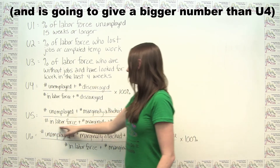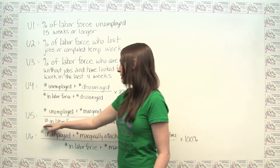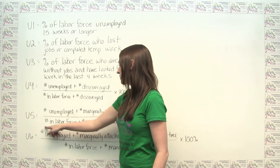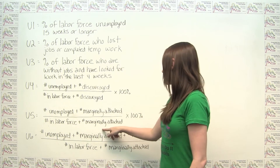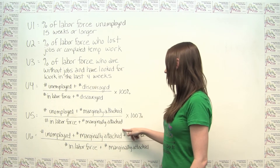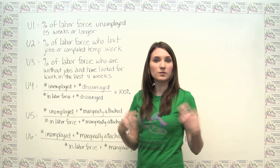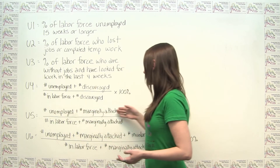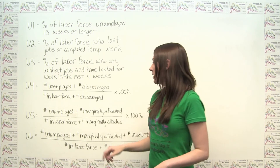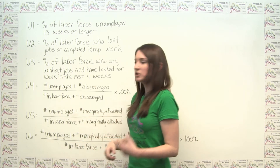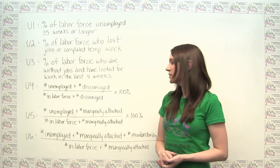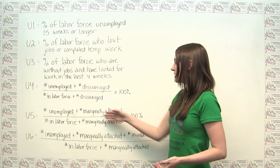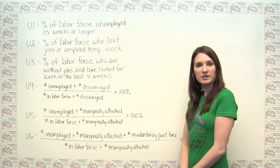In the U5 measure, the pool of people in the denominator includes those traditionally in the labor force plus those counted as marginally attached workers. The numerator counts people who fit the traditional definition of unemployment plus those workers counted as marginally attached. This ratio is multiplied by 100% to get a percentage.